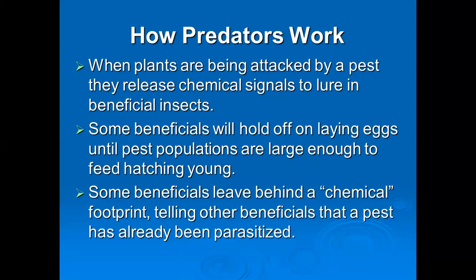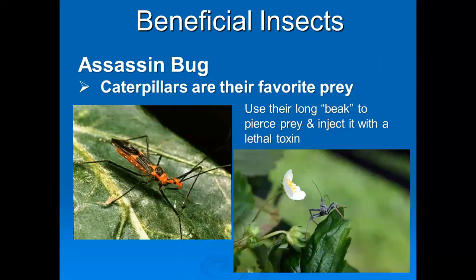Insects can also give out chemicals to tell other predators, 'I've already been here, get away, let me eat till my heart's content.' So there's a synergism between plants and insects. These are assassin bugs, and they're very, very good predators. They have a bite that hurts — it will burn. They have a very long beak that they use to spear their prey. These guys are very effective in controlling caterpillars. But again, if you're trying to have a whole crop of monarchs, assassin bugs don't know a good caterpillar from a bad one — but that's mother nature, that's the cycle of life.